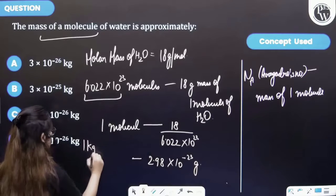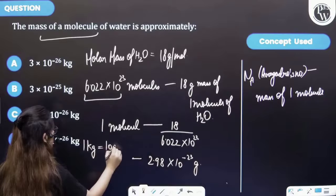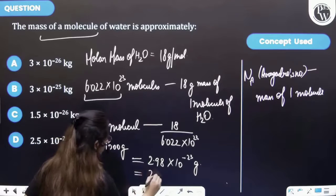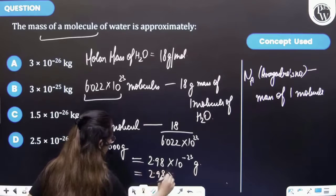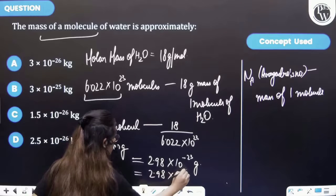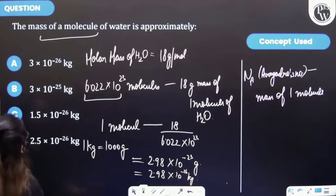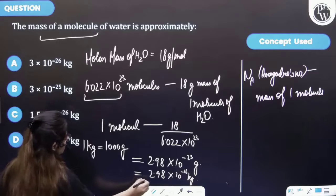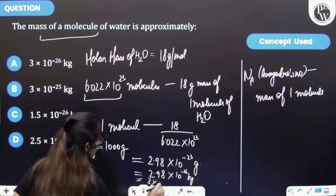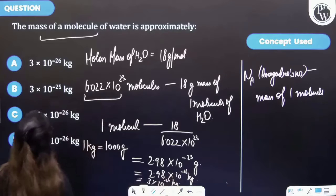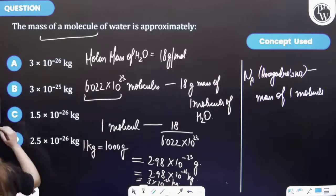And so it will become 2.98 into 10 raised to the power minus 26 kg which is equal to 3 into 10 raised to the power minus 26 kg. And so the correct answer is A.